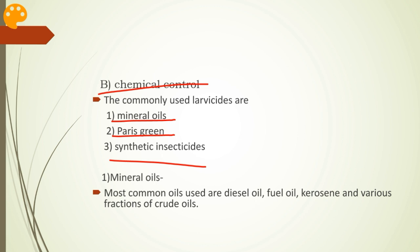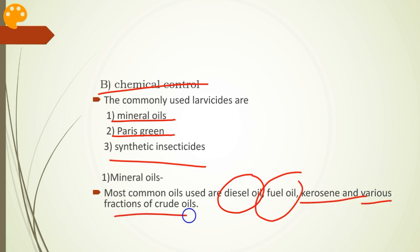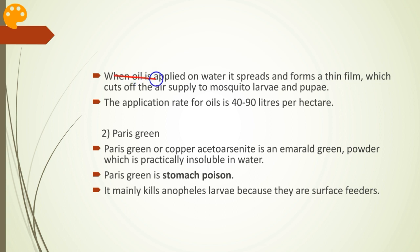The application of oil to water is one of the oldest known mosquito control measures. The oils most commonly used are diesel oil, fuel oil, kerosene, and various fractions of crude oils. Nowadays, special oils such as mosquito larvicidal oil are also available. When oil is applied on water, it spreads and forms a thin film which cuts off the air supply to mosquito larvae and pupae. The application rate for oils is 40 to 90 liters per hectare.